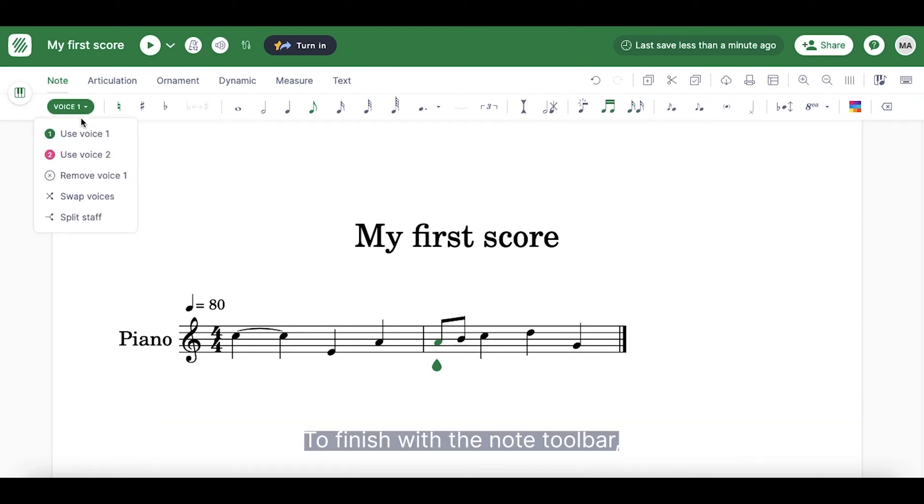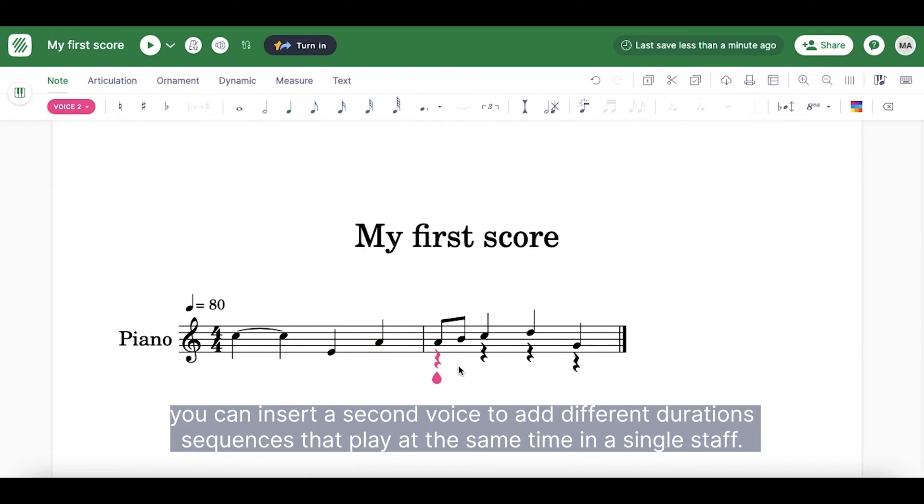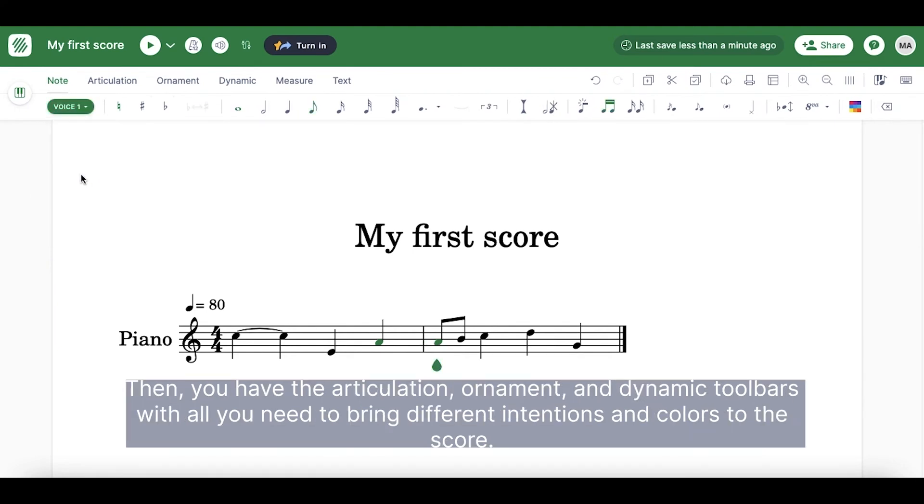To finish with the note toolbar, you can insert a second voice to add different duration sequences that play at the same time in a single staff. Then, you have the articulation, ornament and dynamic toolbars with all you need to bring different intentions and colors to the score.